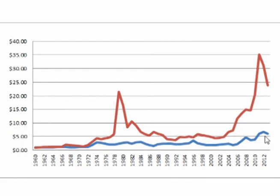So in 2013, the price of corn was about six times as high as the price of corn in 1960. And in 2013, the price of silver was about 26 times as high as the price of silver in 1960.